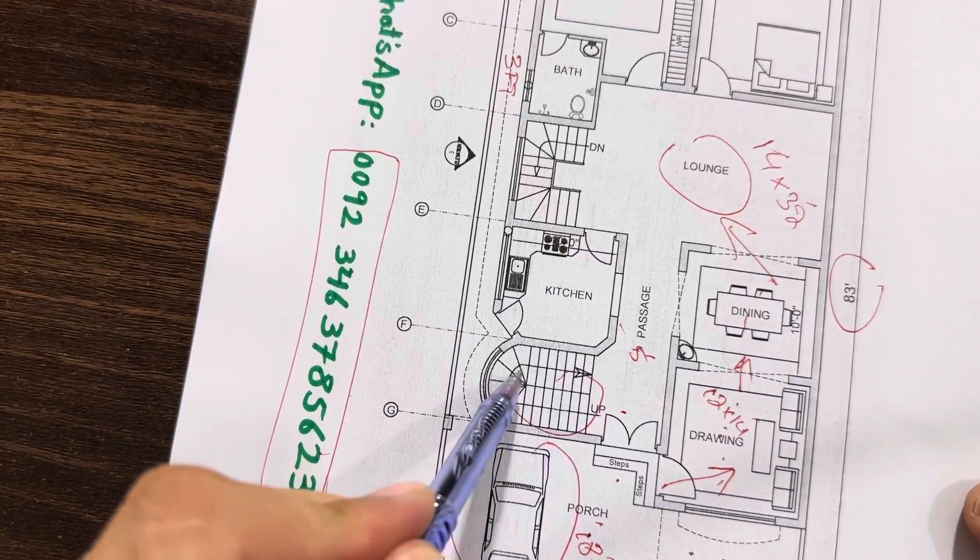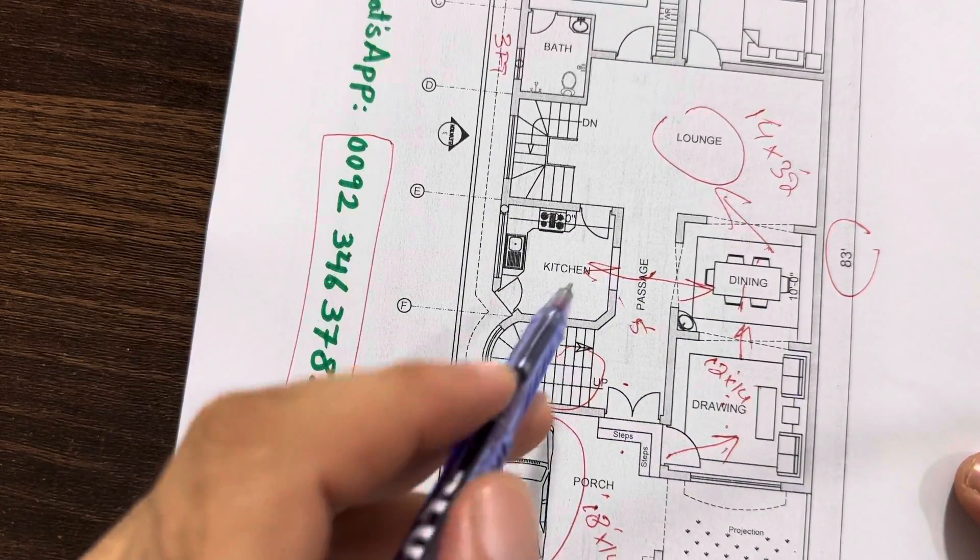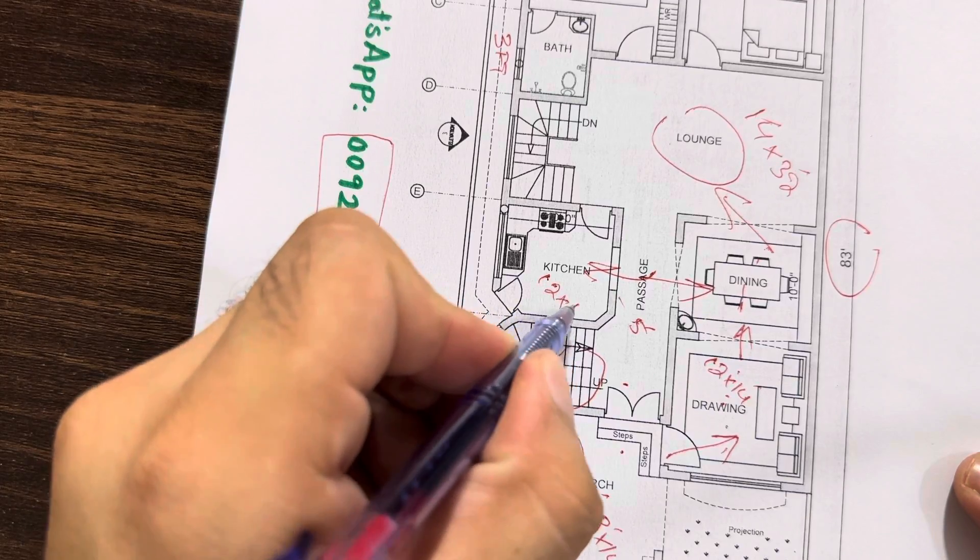This is a stair hall for the first floor. This is kitchen opposite of this kitchen. And you can see this is a dining. Size of the kitchen is 12 by 12 feet.